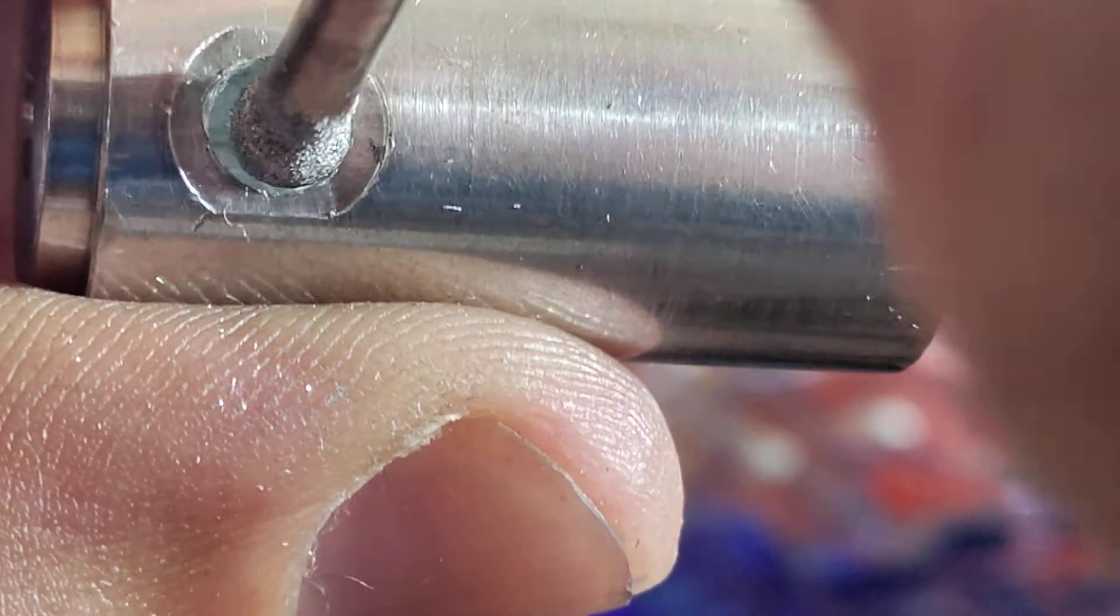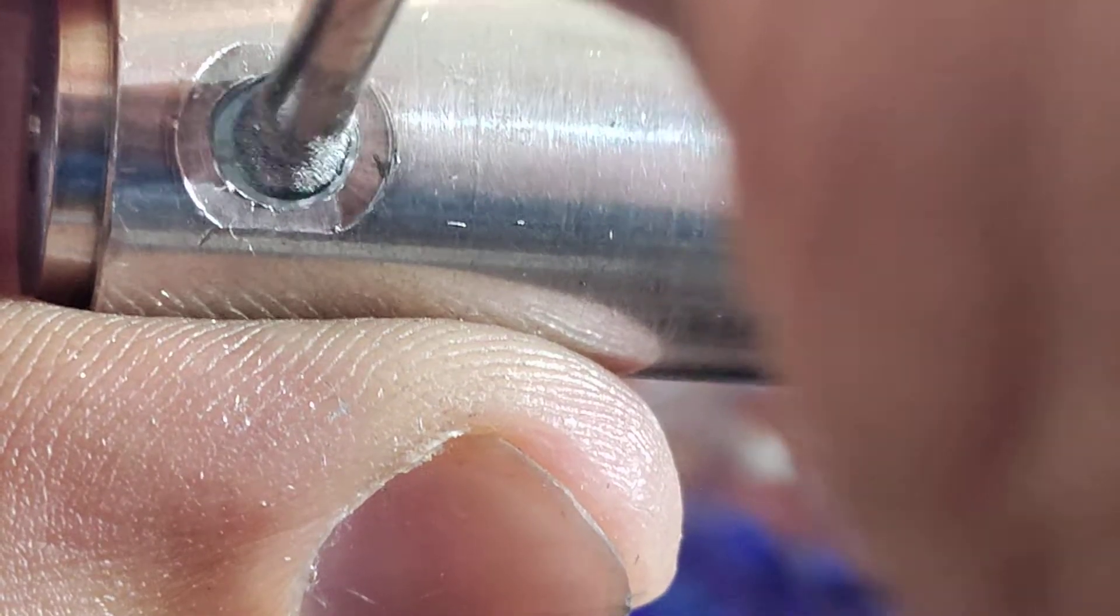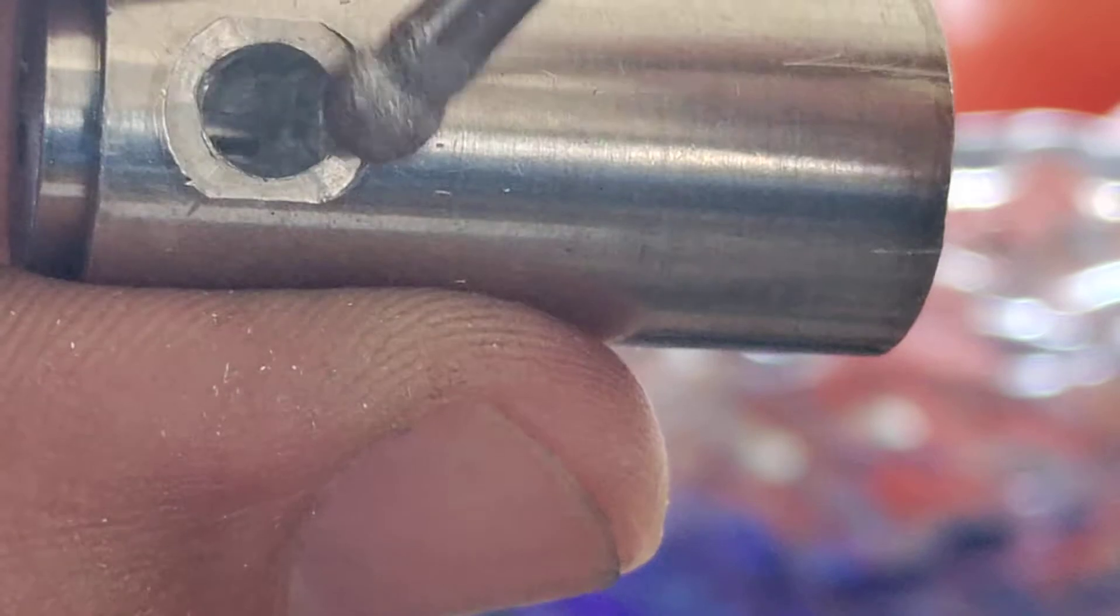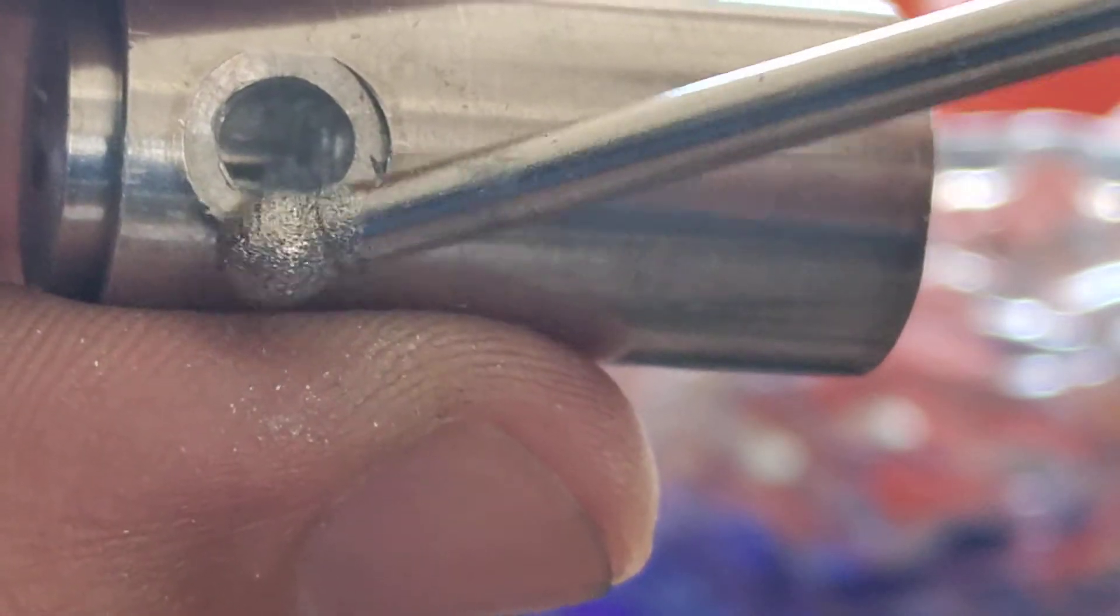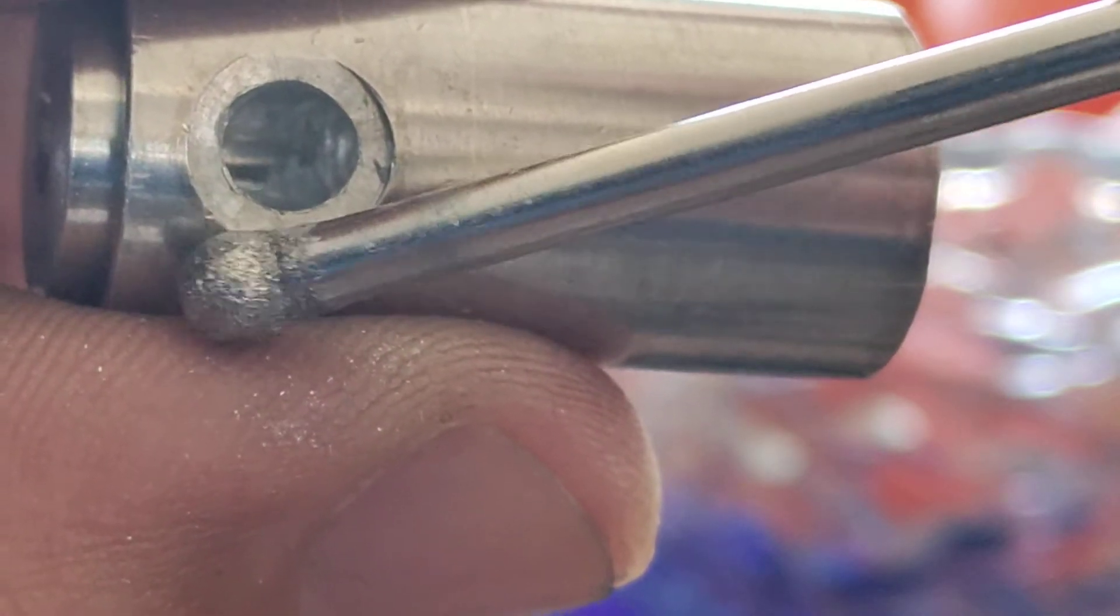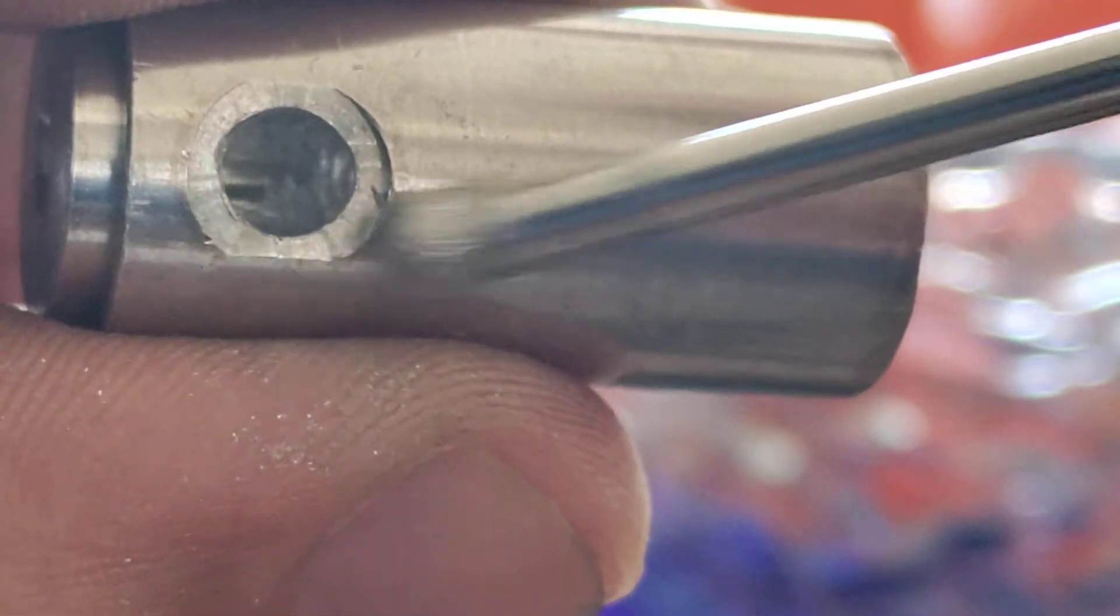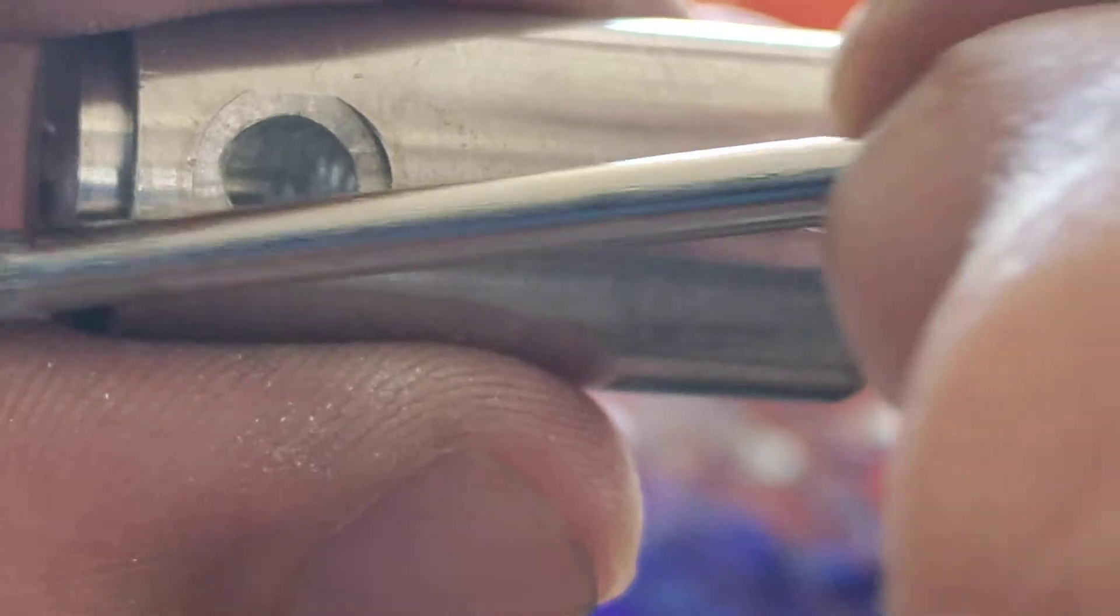I mean look at this - this is a Dremel chuck. That's the chuck, the neck, the shaft that's going to go inside of a Dremel tool. So this looks a lot bigger than it is but we all know how small those are. I mean look at my fingers, this thing is tiny.